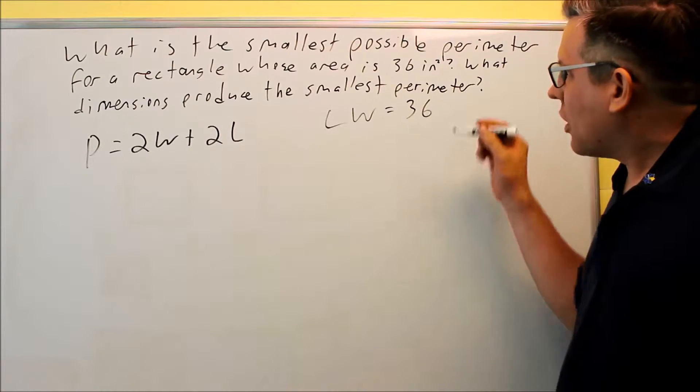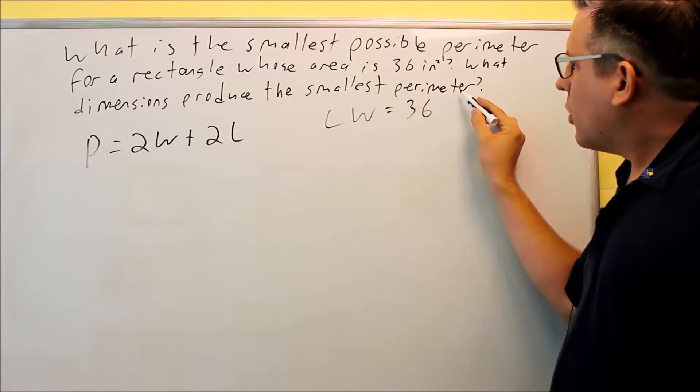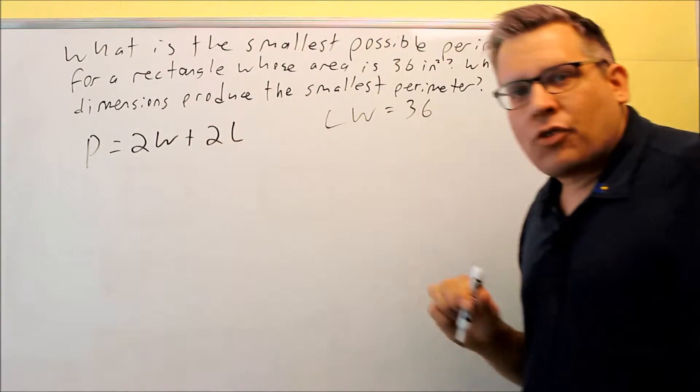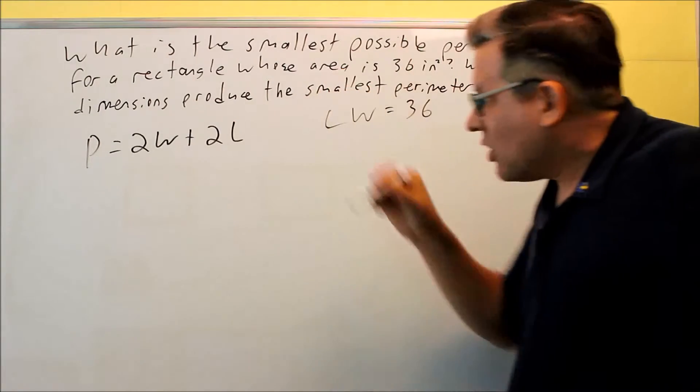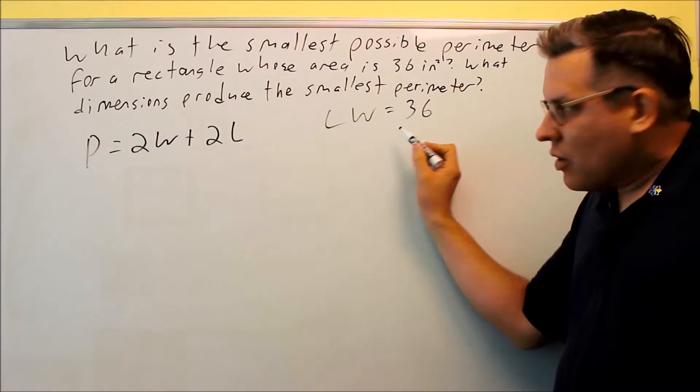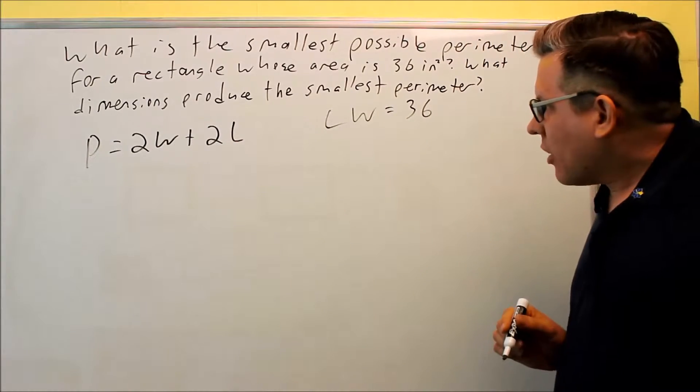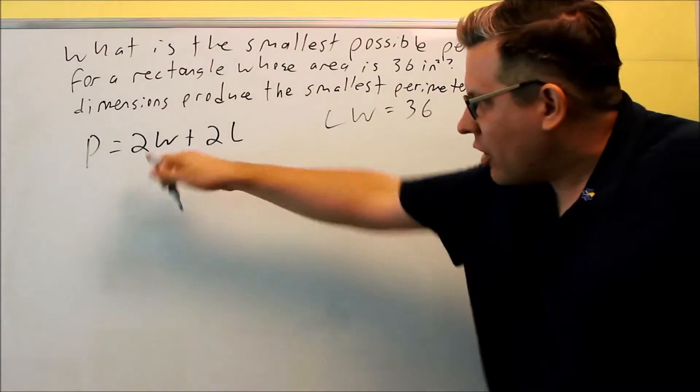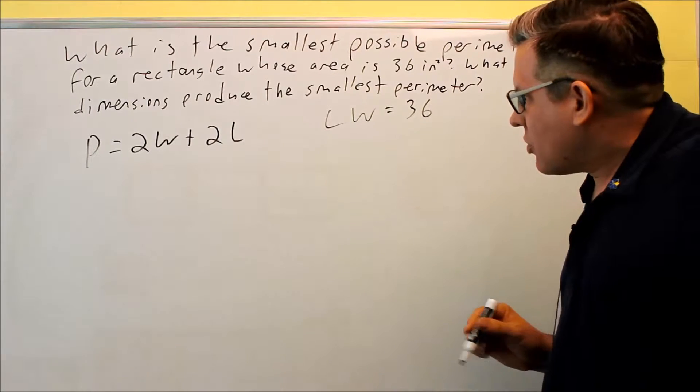Now, because it's talking about what dimensions produce the smallest perimeter and find the smallest perimeter, that means we need to take the derivative of the perimeter. It's better to have one variable in it only, because that's the information we've been provided. So you want to do a substitution on this one, so we can either get rid of the W or get rid of the L. It really doesn't matter. In this case, I'm going to solve for W and put it in here, but it makes no difference which variable you decide to solve for, you'll get the same answers.